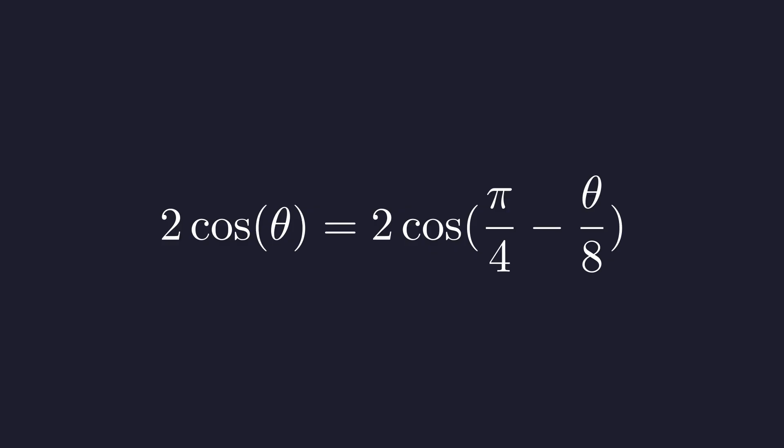This gives us a linear equation for θ. Adding θ over 8 to both sides and combining the θ terms, this simplifies to 9θ over 8 equals π over 4. Multiplying both sides by 8 ninths to isolate θ, we get θ equals 2π over 9.